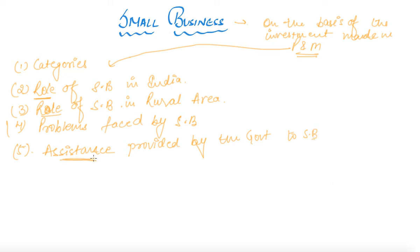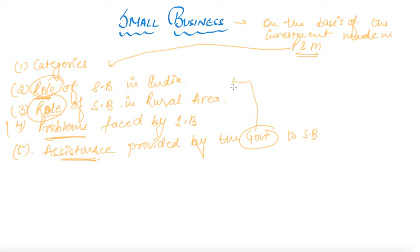What are the reasons we are going to learn regarding the assistance that the government has provided? Because being a small business, it is less in terms of investment, and as it plays a vital role in our economy, it should be benefited. Since there are various problems that small business has faced, it is only the government which can help the small business to grow. This is what we are going to learn under this chapter.